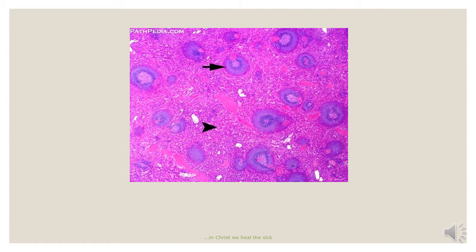We move to the slide of the spleen. The spleen is a lymphoid organ made up of red pulp and white pulp. Microscopically, the spleen appears to consist of discrete white nodules called the white pulp, embedded in a red matrix called the red pulp. The white pulp consists of lymphoid aggregates, as you can see in our slide, and the red pulp makes up the background.